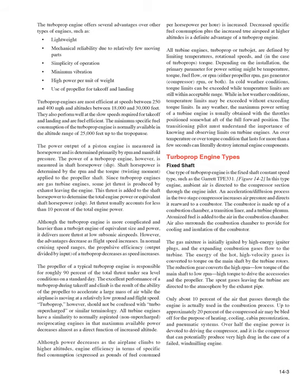Turboprop Engine Types — Fixed Shaft. One type of turboprop engine is the fixed shaft constant speed type, such as the Garrett TPE 331. In this type of engine, ambient air is directed to the compressor section through the engine inlet. An acceleration/diffusion process in the two-stage compressor increases air pressure and directs it rearward to a combustor, made up of a combustion chamber, a transition liner, and a turbine plenum. Atomized fuel is added in the combustion chamber, and the expanding combustion gases flow to the turbine. The energy of the hot, high-velocity gases is converted to torque on the main shaft by the turbine rotors. The reduction gear converts high RPM/low torque to low RPM/high torque to drive the accessories and propeller. Spent gases are directed to the atmosphere by the exhaust pipe.